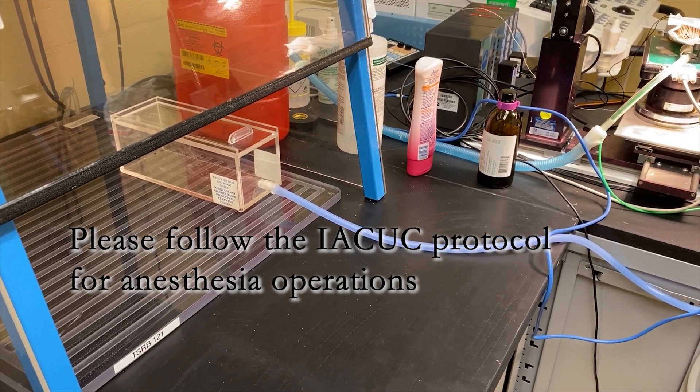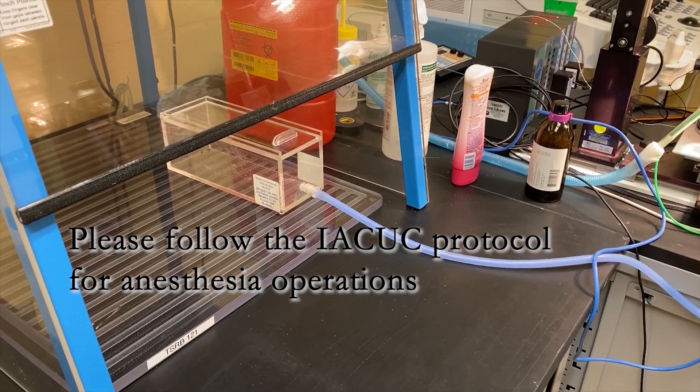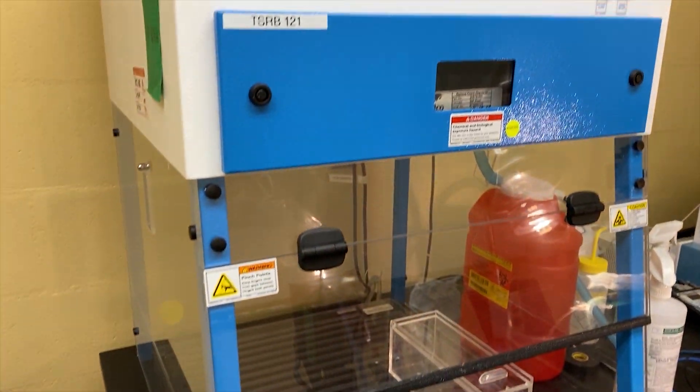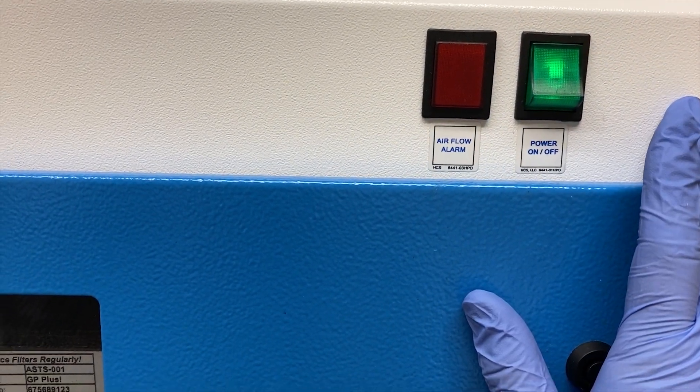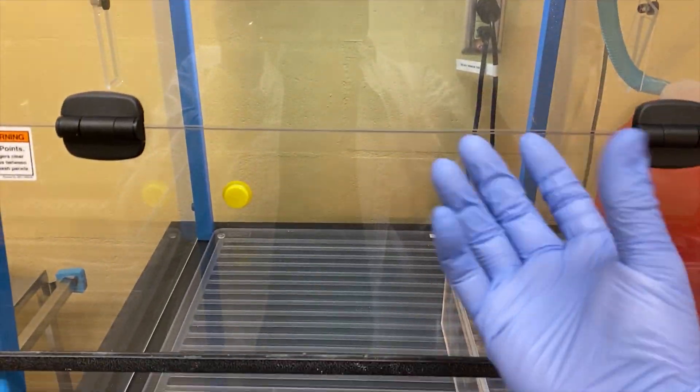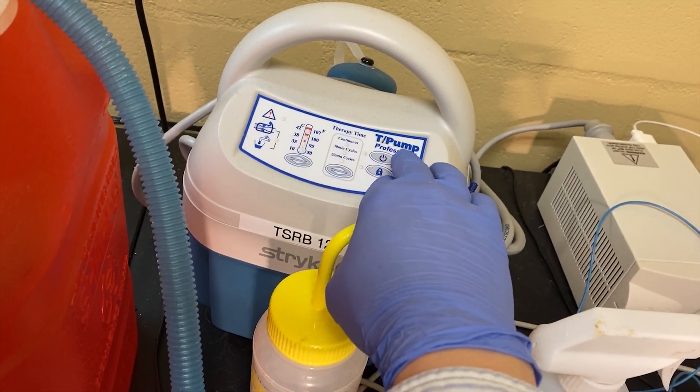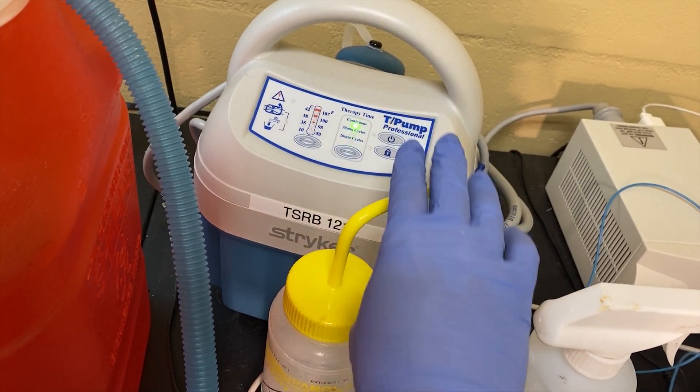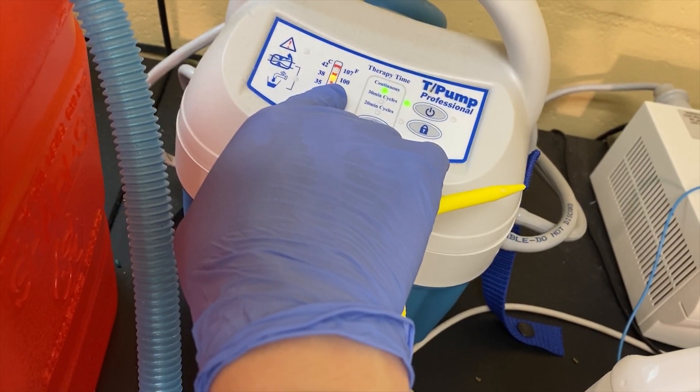Next, I will introduce the anesthesia device for mice. First, you need to open this device here, open it, and the light will turn on. And open the warmer. Be careful, temperature is 100.